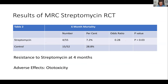These are the results of the MRC streptomycin trial. The six-month mortality: four of 55 patients in the streptomycin group died within the first six months, compared to 15 of 52 in the control group — a 7.2% mortality rate versus 28.8%, a significant difference. The odds ratio was 0.28 and the p-value was 0.03, a statistically significant result. However, they noticed resistance to streptomycin developing as early as four months into therapy, and there were adverse effects like ototoxicity. Streptomycin was not the silver bullet for tuberculosis. The control group had 11 excess deaths compared to streptomycin.